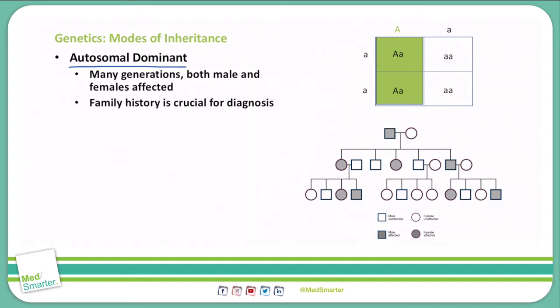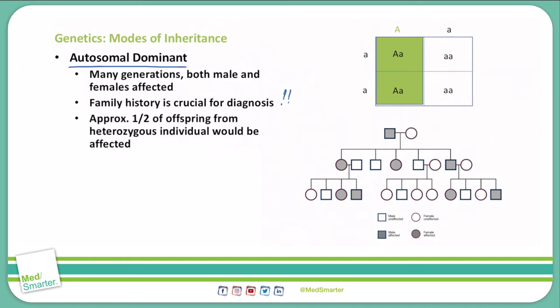To be able to diagnose this, you need to get a good family history. You'll see approximately half of the offspring from a heterozygous individual will be affected. The heterozygous individual has one copy of the mutated gene and one copy of a regular gene. That mutated gene, since it is dominant, will be expressed in every offspring that it is present in. So you see over here on the right, this mutated A is present in both of those two offspring, and when there's not a mutated A, you have a homozygous normal offspring.